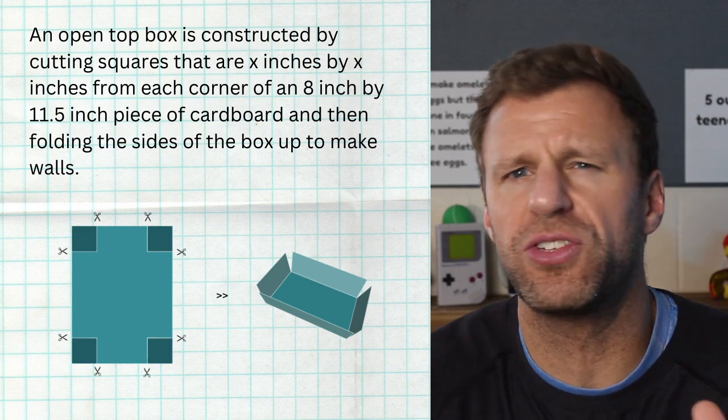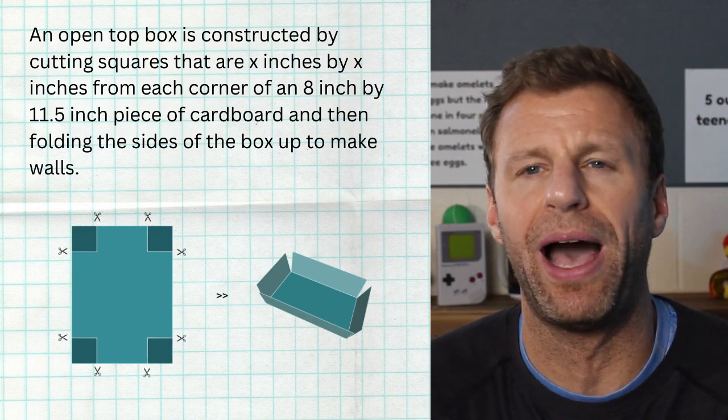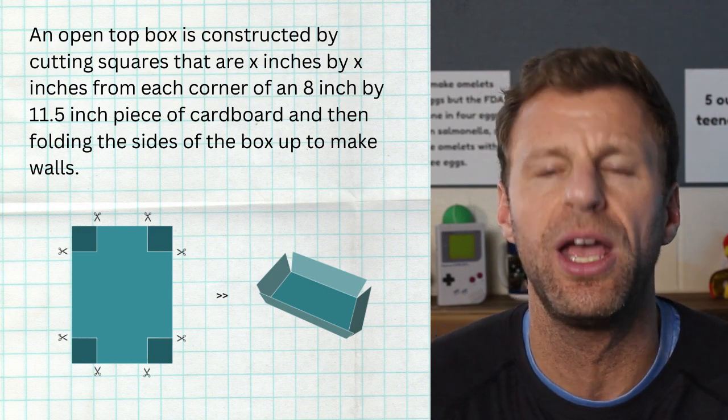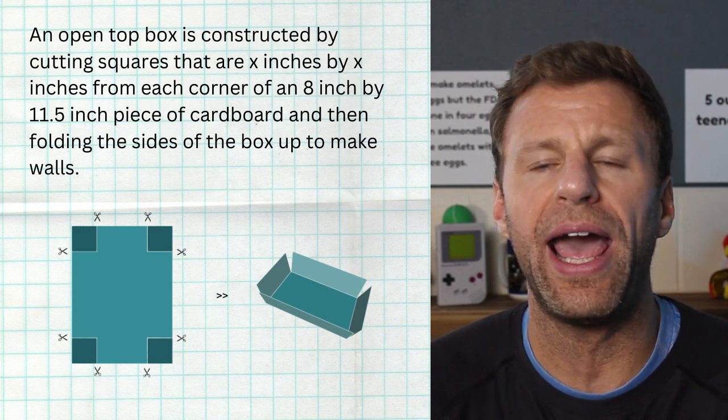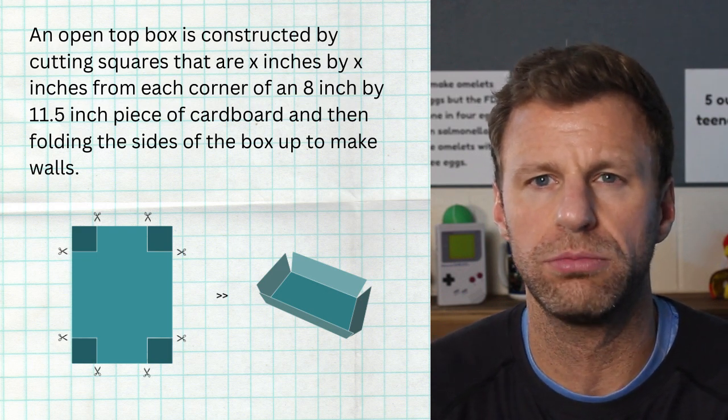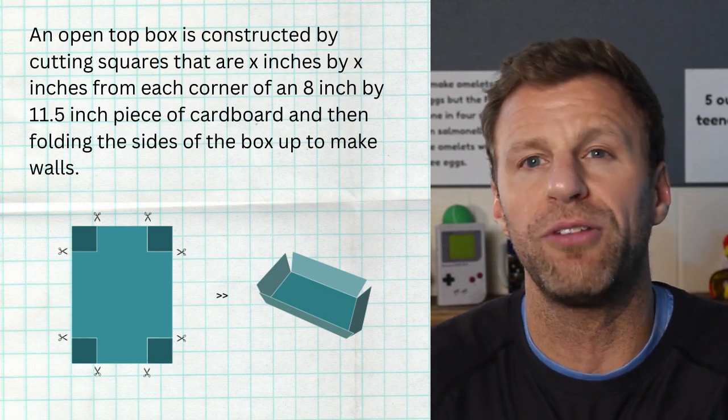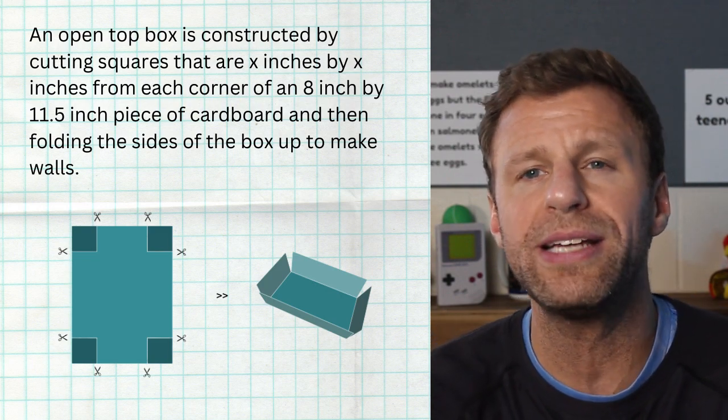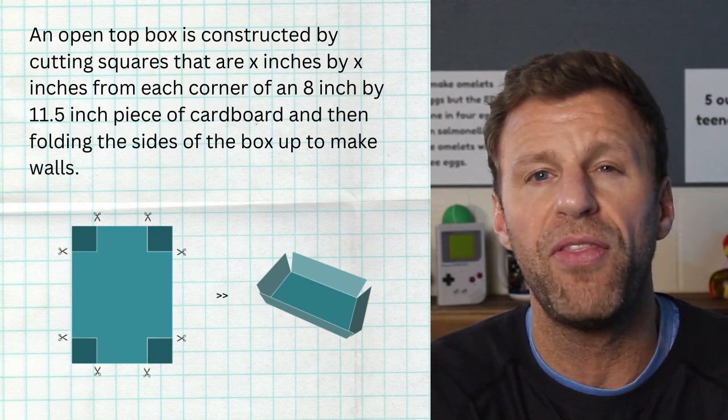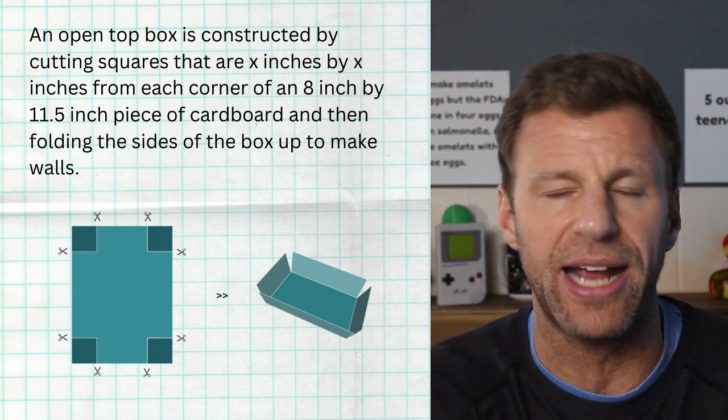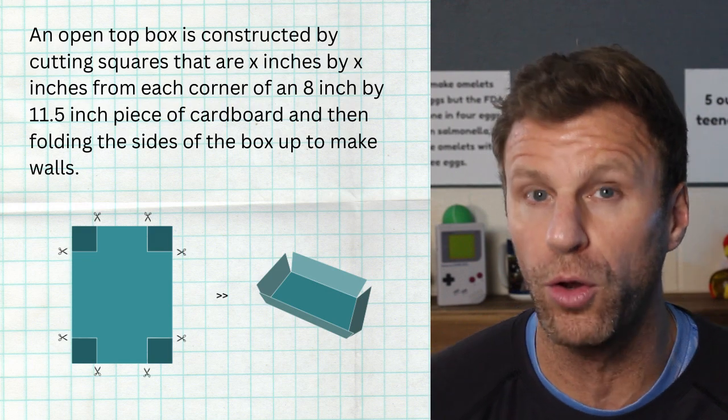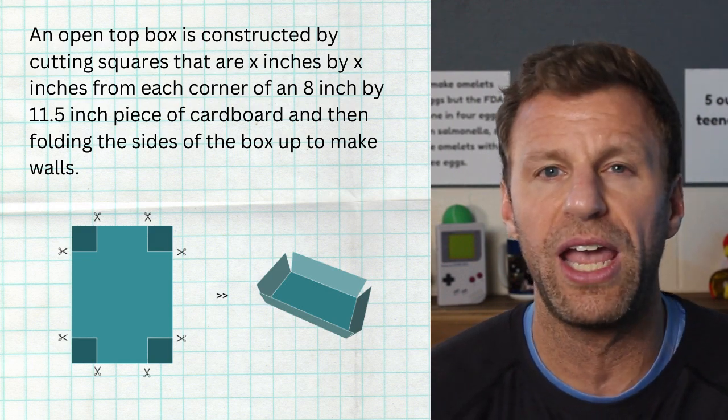So here is our specific problem. We have a piece of paper or a piece of cardboard that's eight inches by 11 and a half inches. And we're going to cut out x from each corner. We're gonna cut out squares from each corner of length x. We're gonna fold those edges up. And the question is, what is the maximum area that we could get based on x? But we first have to model this problem with a function.